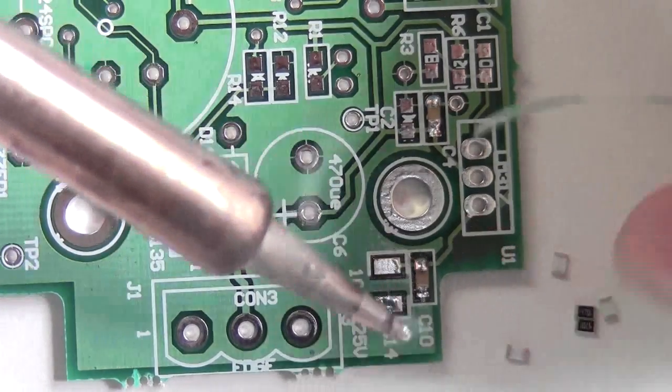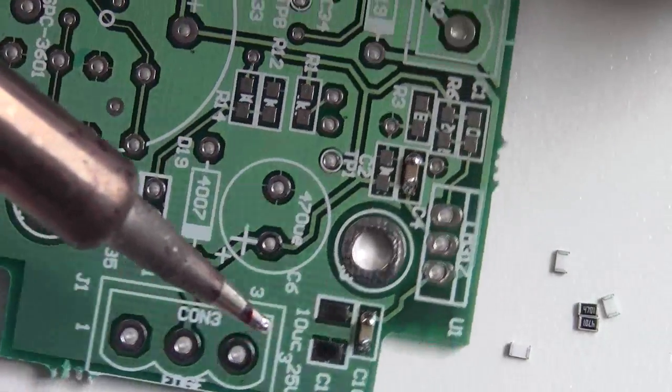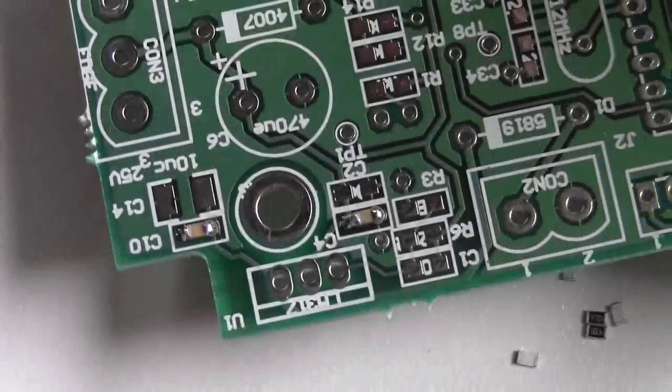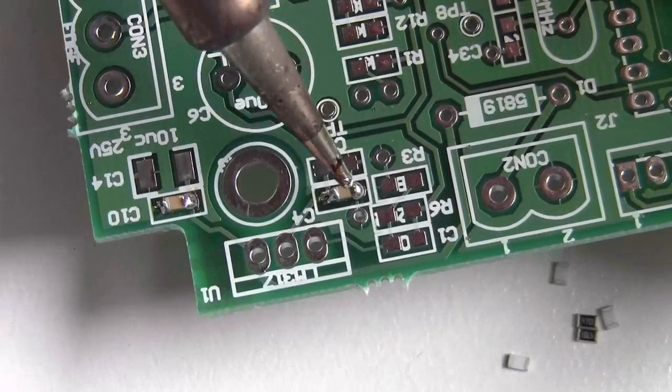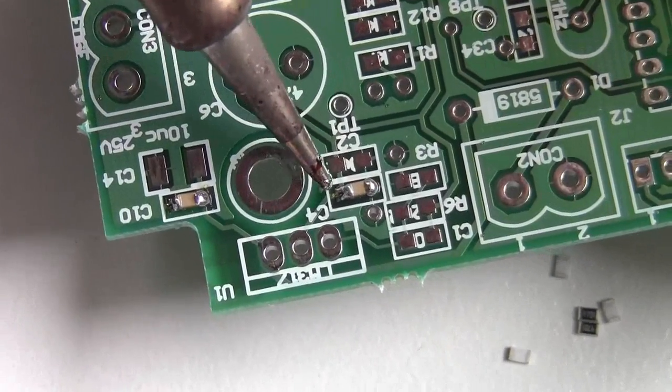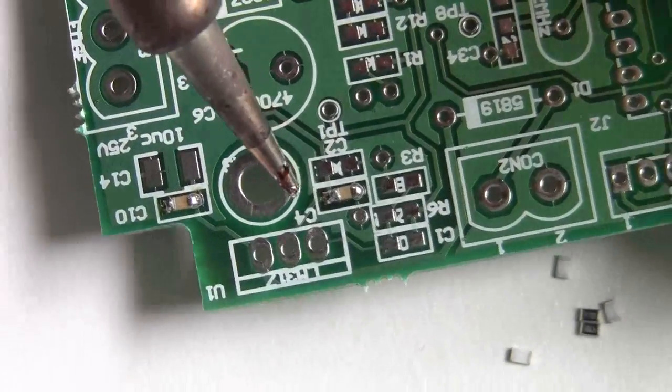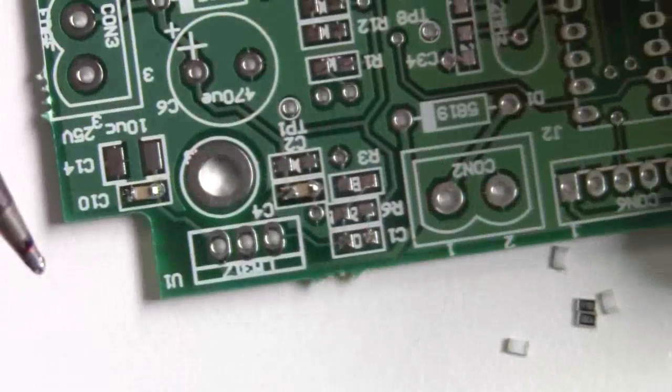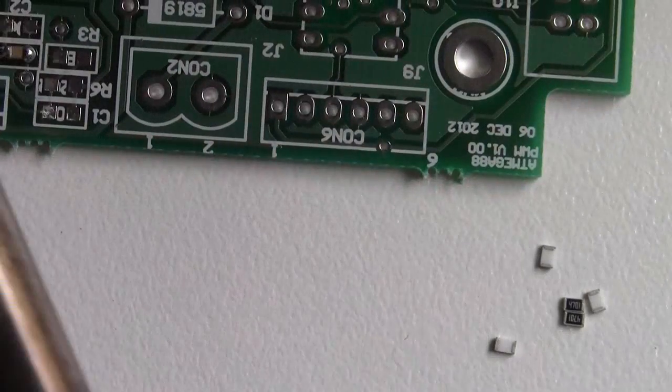It looks a bit blobby. You should try and minimize the amount of solder you put on it so that it doesn't look - that one there looks a bit too blobby. That one there is probably right. You want to sort of fill it in properly.